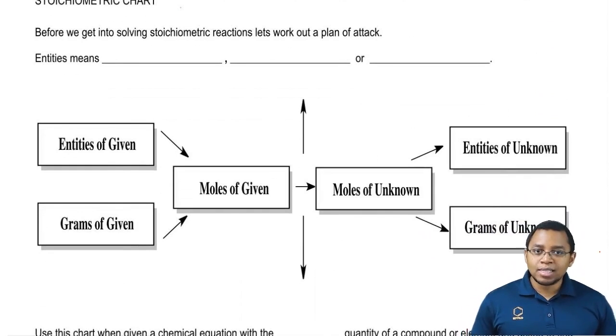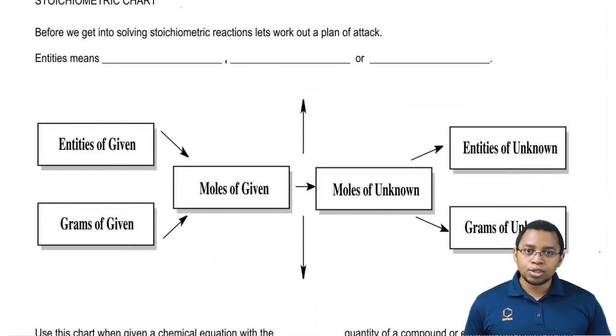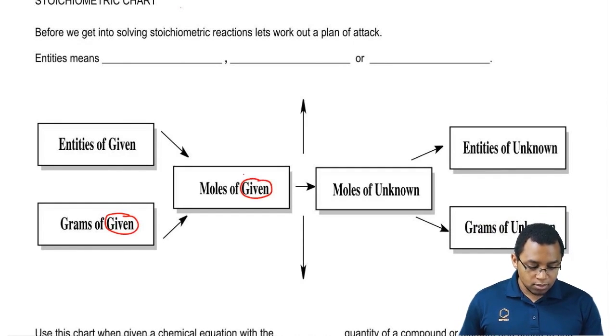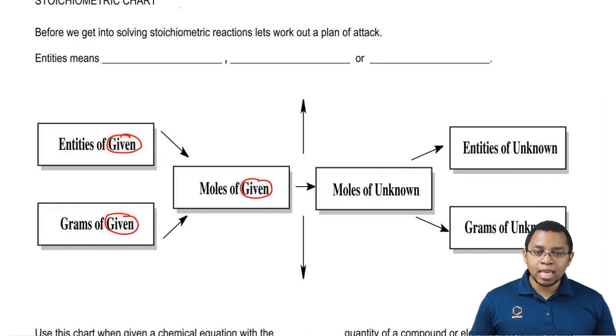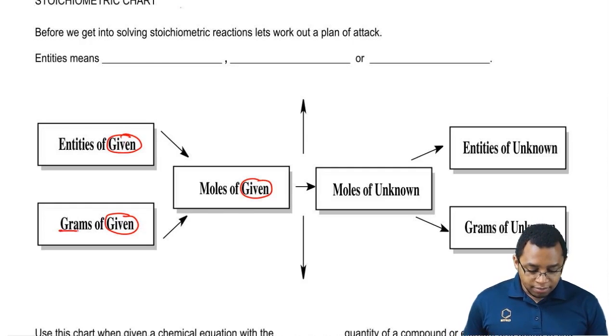Now what we should realize is the stoichiometric chart is broken up into two basic types. We have our given information, and that'll be information they tell you in the very beginning of the chemical equation or chemical question. We're going to say that the given information will be in grams, moles, or maybe entities.